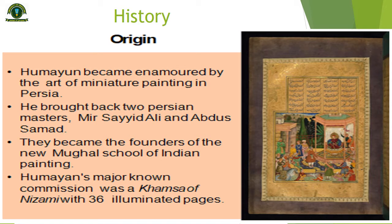Humayun became enamored by the art of miniature painting in Persia. He brought back two Persian masters: Meer Sayyid Ali and Abdus Samad. They became the founders of the new Mughal school of Indian painting.